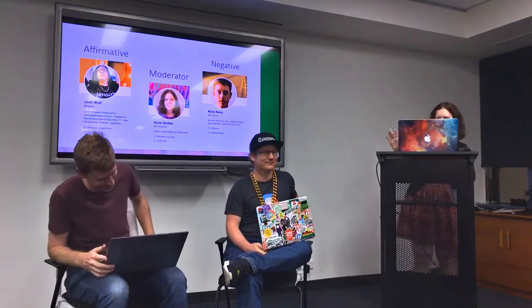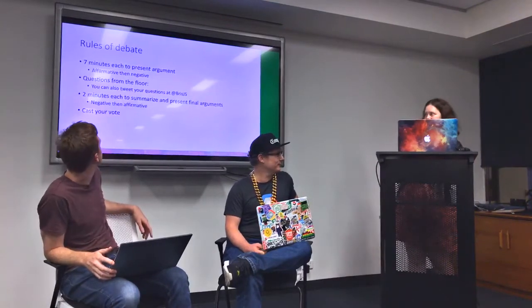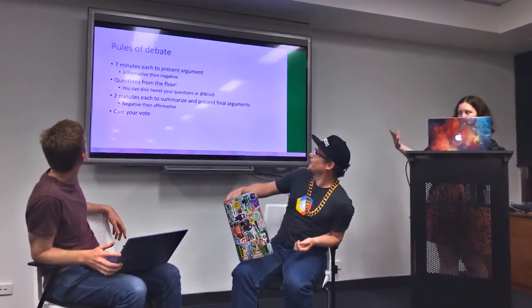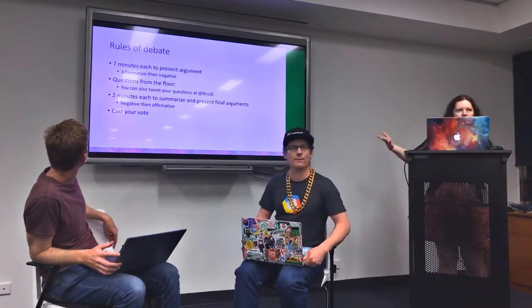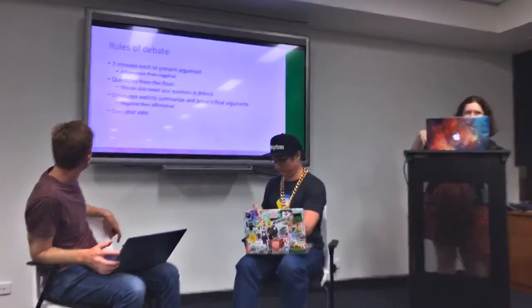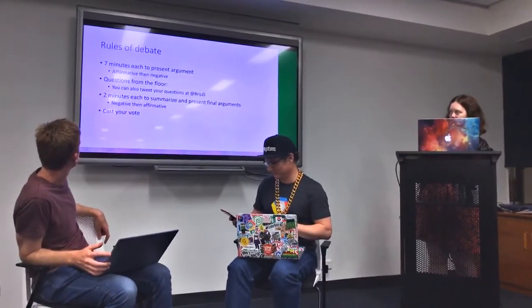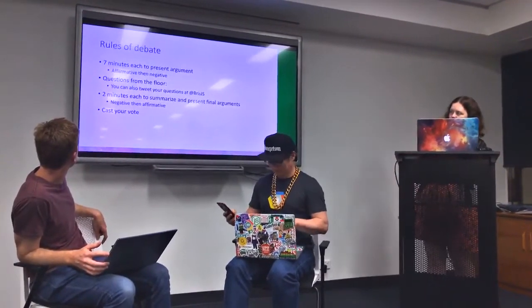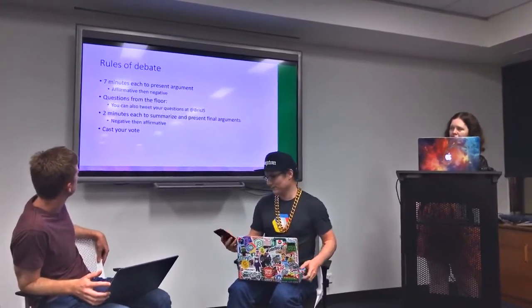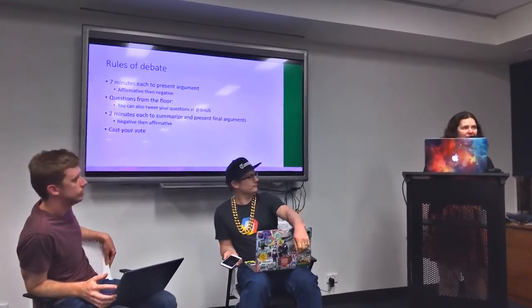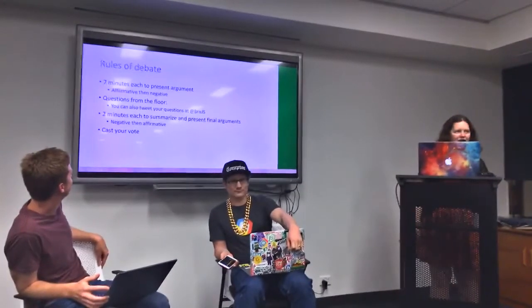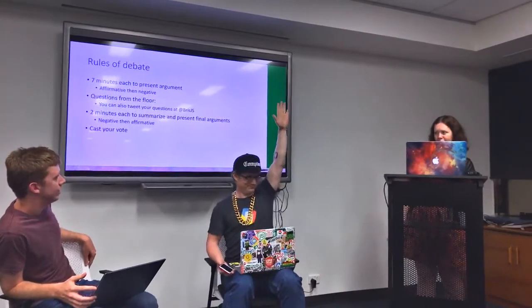Remember, there's a code of conduct. Hopefully we will get some interesting perspectives on this issue. The rules of the debate: you will each have seven minutes to present your side of the story. We'll start with the affirmative, then the negative will follow. Then there'll be some debate — questions from the floor. If you want to tweet and don't want to admit to your question in person, you can tweet at BrisJS and we'll be monitoring that. We'll have some questions, some discussion, and then towards the end, five minutes before the end, we'll have two minutes each to wrap up and present your final arguments. Then we will cast our vote by clapping — whoever gets the loudest applause is declared the supreme ruler of BrisJS for tonight.